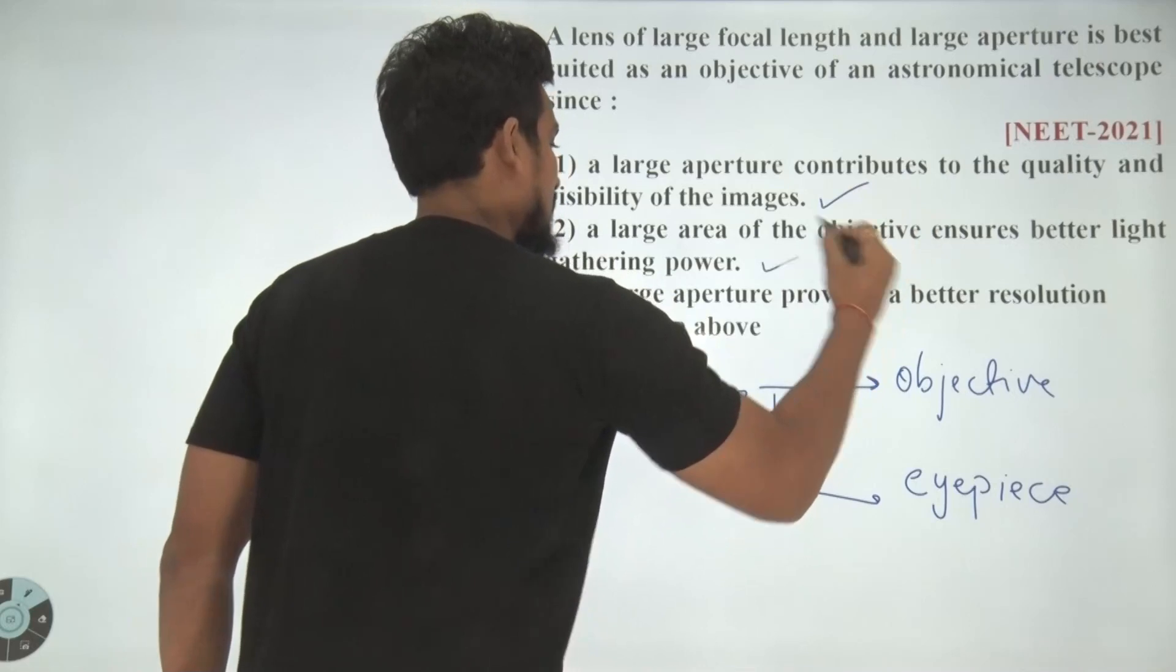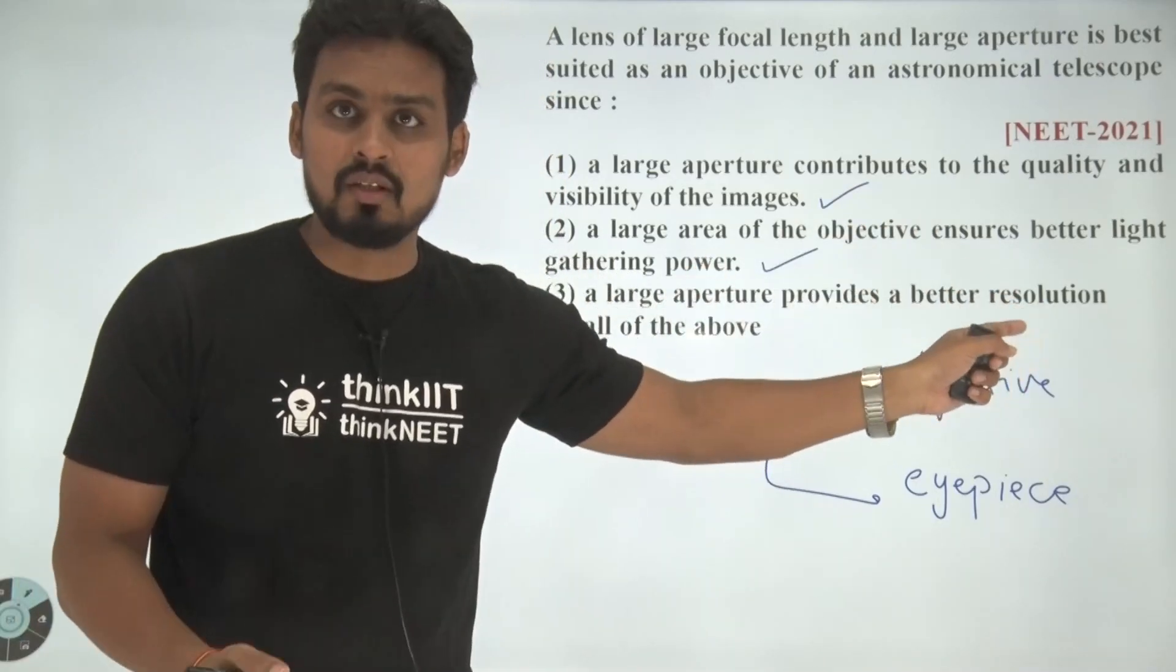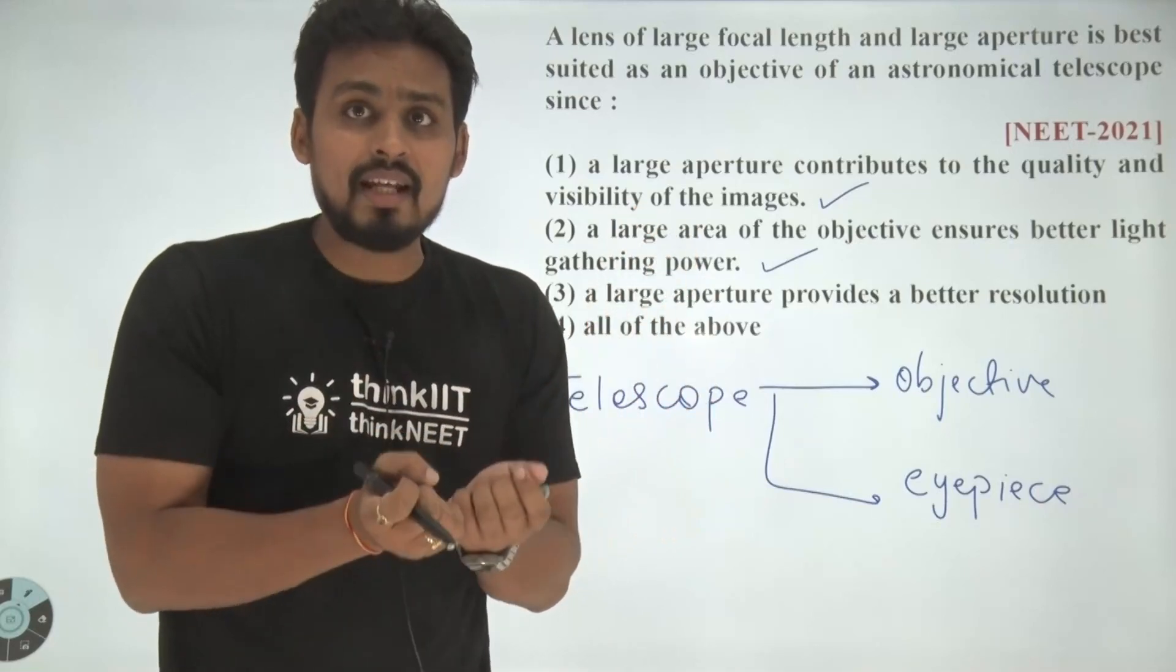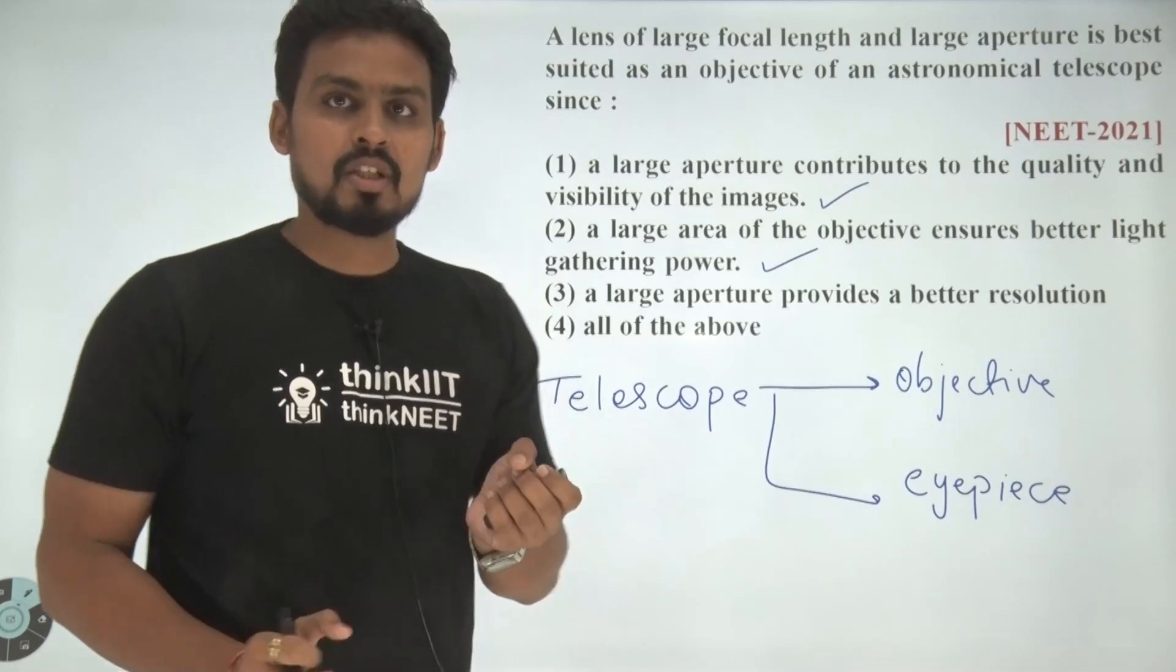Hence, this is correct. This is correct. Third point: a large aperture provides a better resolution. Of course, if the gathering of light is more, we will be able to resolve two very closely spaced objects.